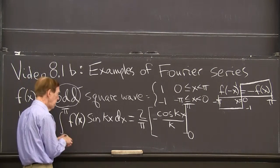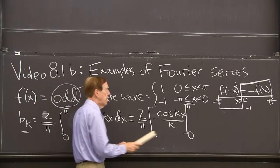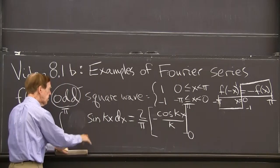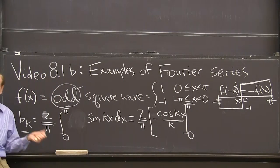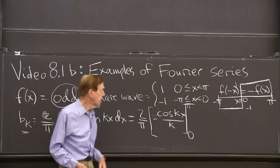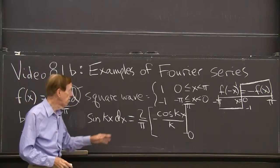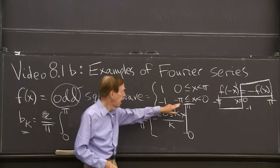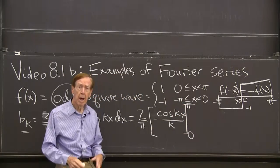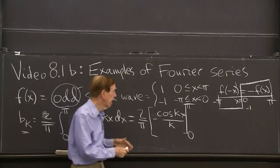But my function on 0 to pi is 1. My nice square wave is just plus 1 there. So I'm just integrating sine kx dx. We can do this. It's minus cosine kx divided by k. That's the integral with the 2 over pi factor. Now I have to put in pi and 0 and put in the limits of integration and get the answer.